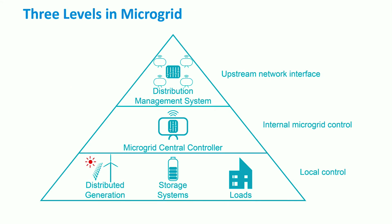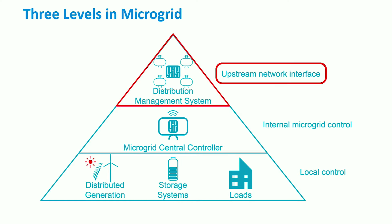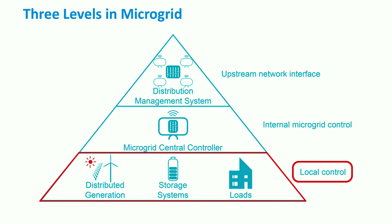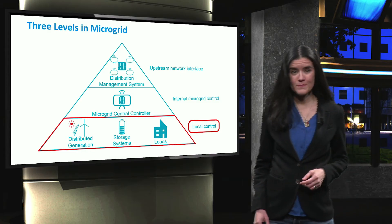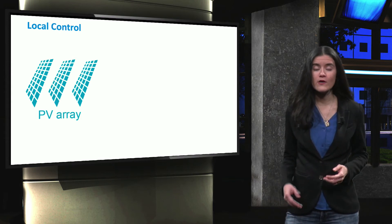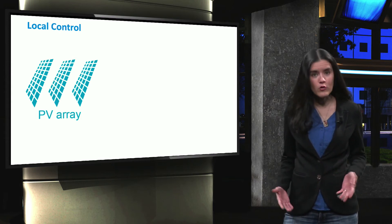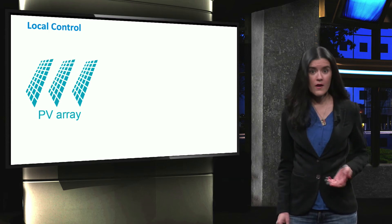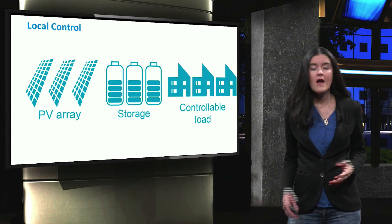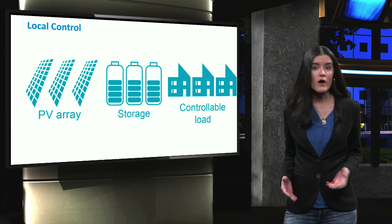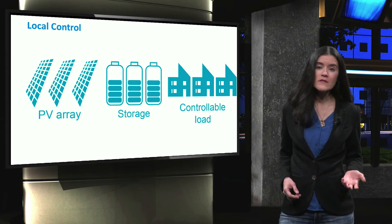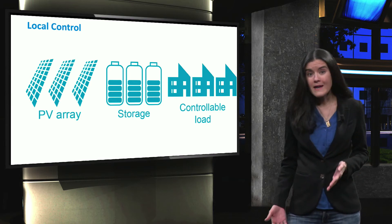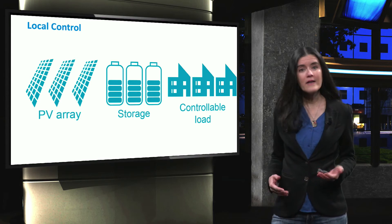The control architecture of a microgrid can be divided into three different layers: microgrid upstream network control, internal microgrid control, and local control. The microgrid local control layer performs functionalities that are local and performed by a single unit — for example, a distributed generator, a storage unit, or a controllable load. Some of the actions performed are protection, primary frequency control, primary voltage control, primary active and reactive power control, and storage management.